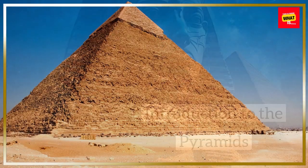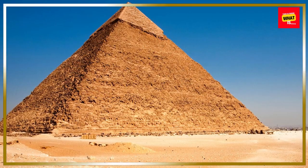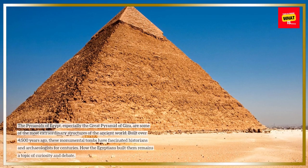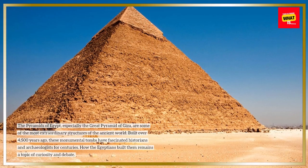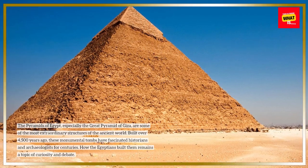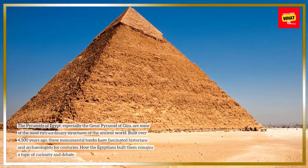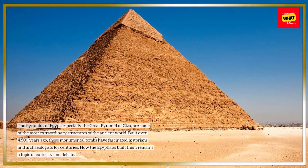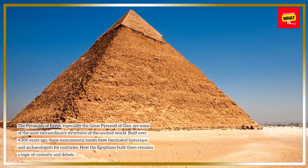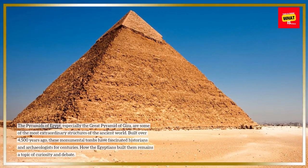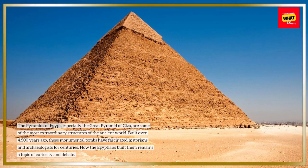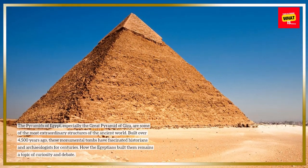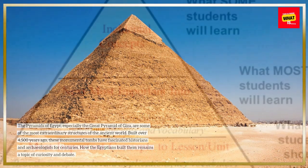The Pyramids of Egypt, especially the Great Pyramid of Giza, are some of the most extraordinary structures of the ancient world. Built over 4,500 years ago, these monumental tombs have fascinated historians and archaeologists for centuries. How the Egyptians built them remains a topic of curiosity and debate.